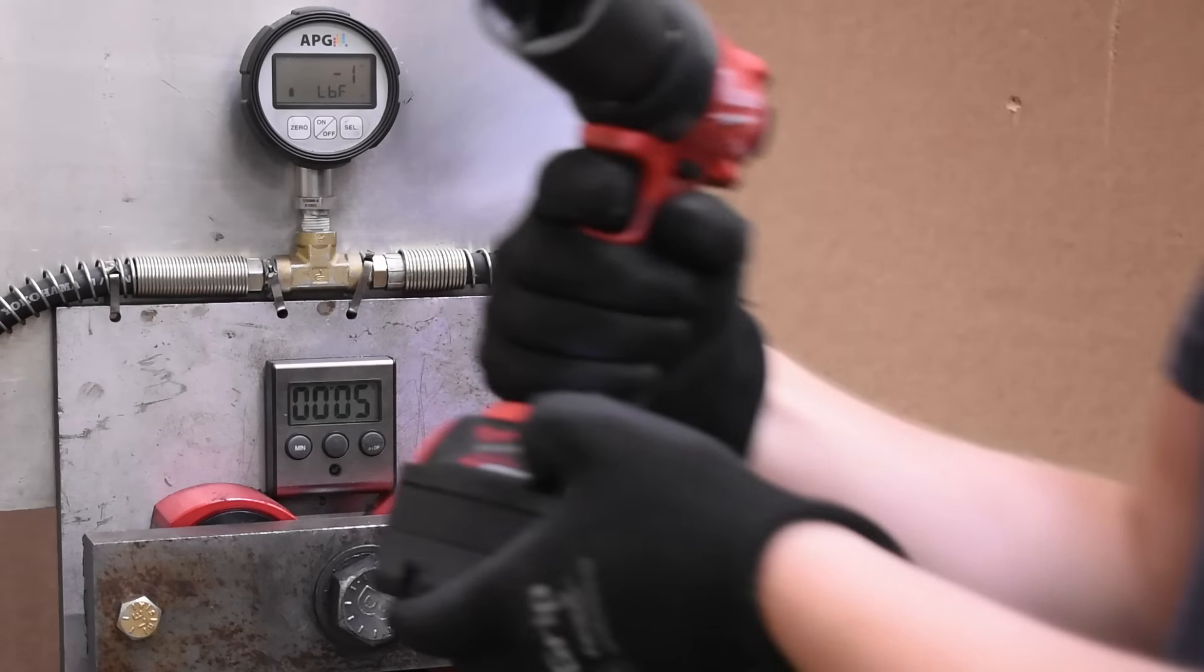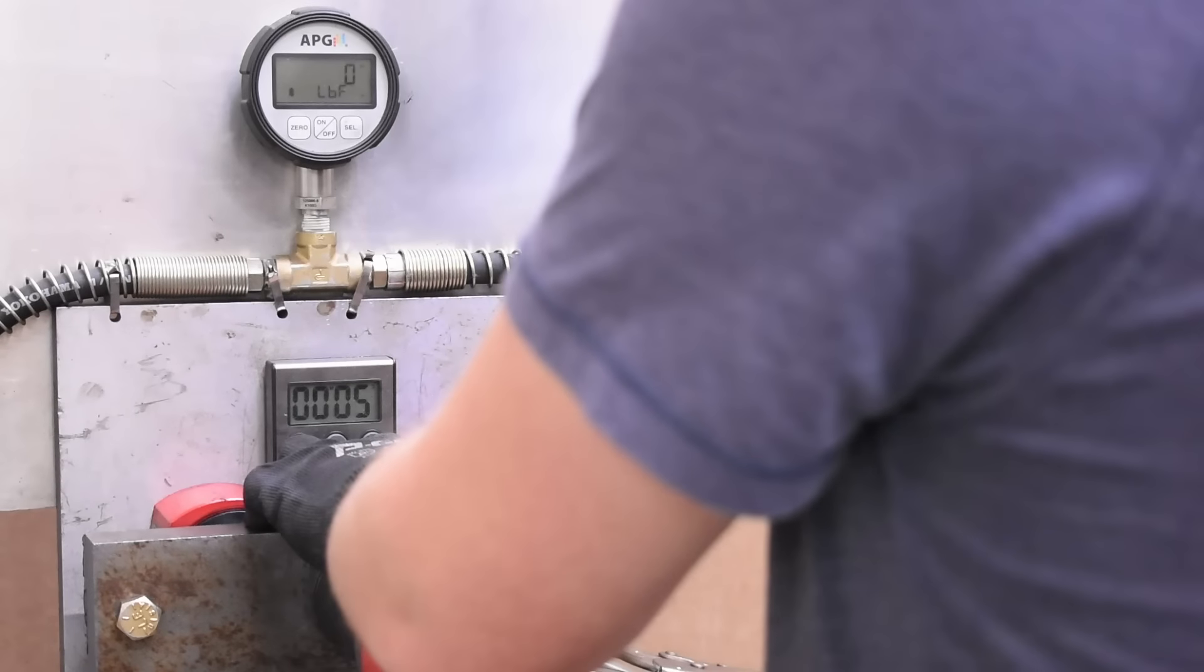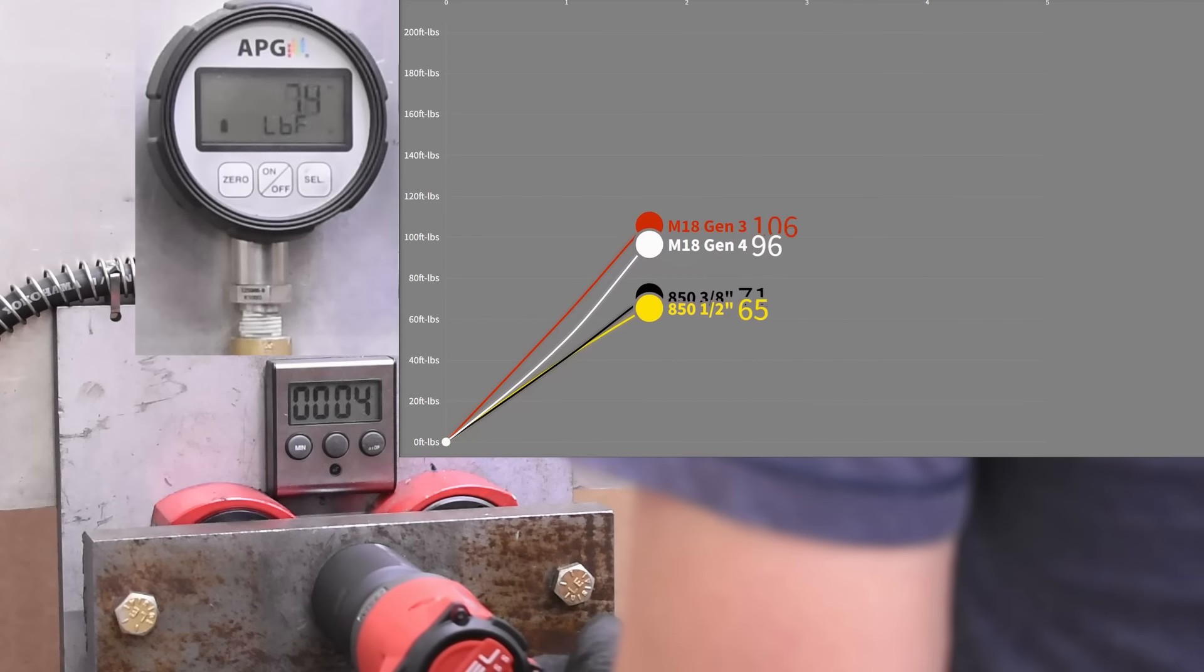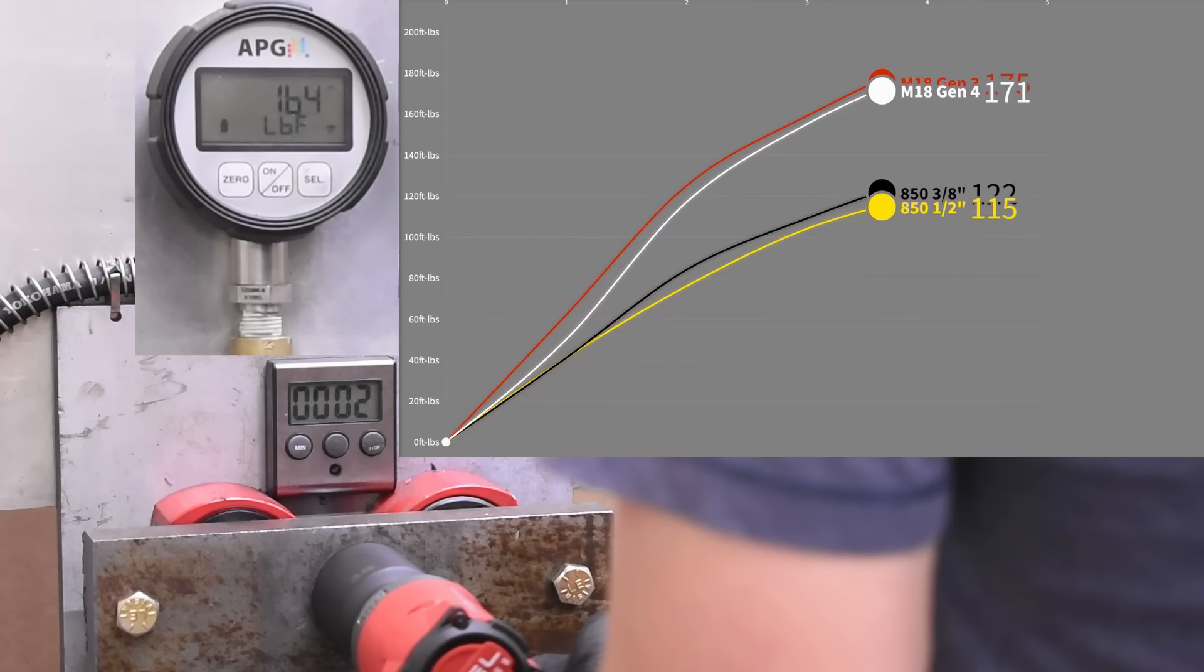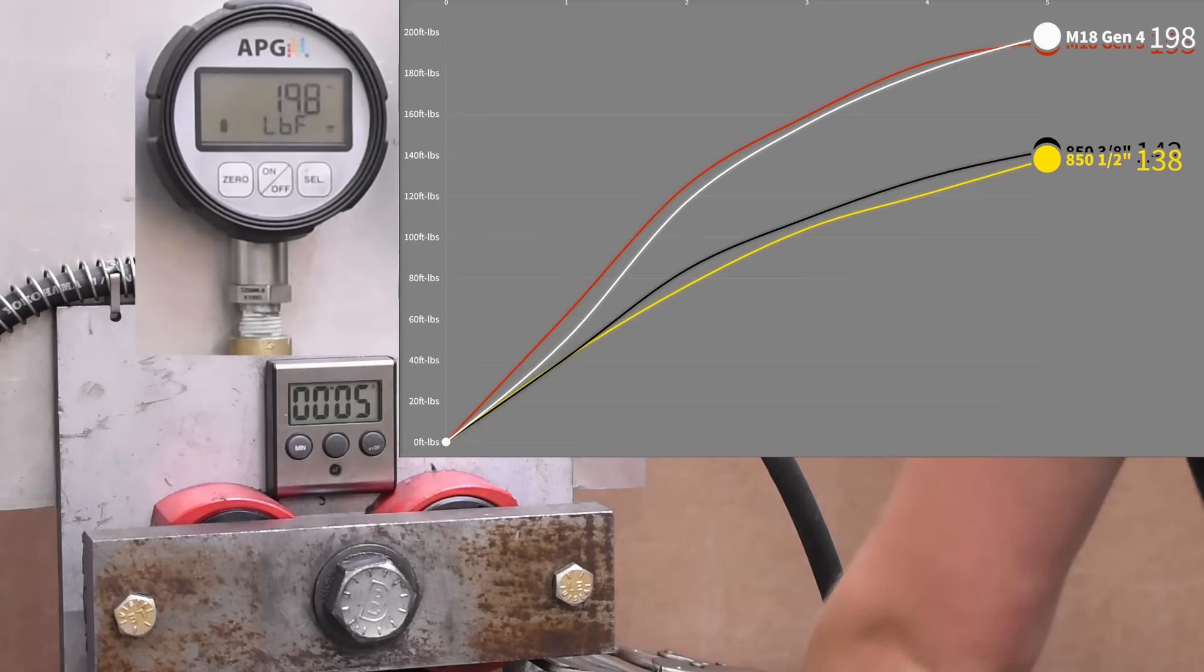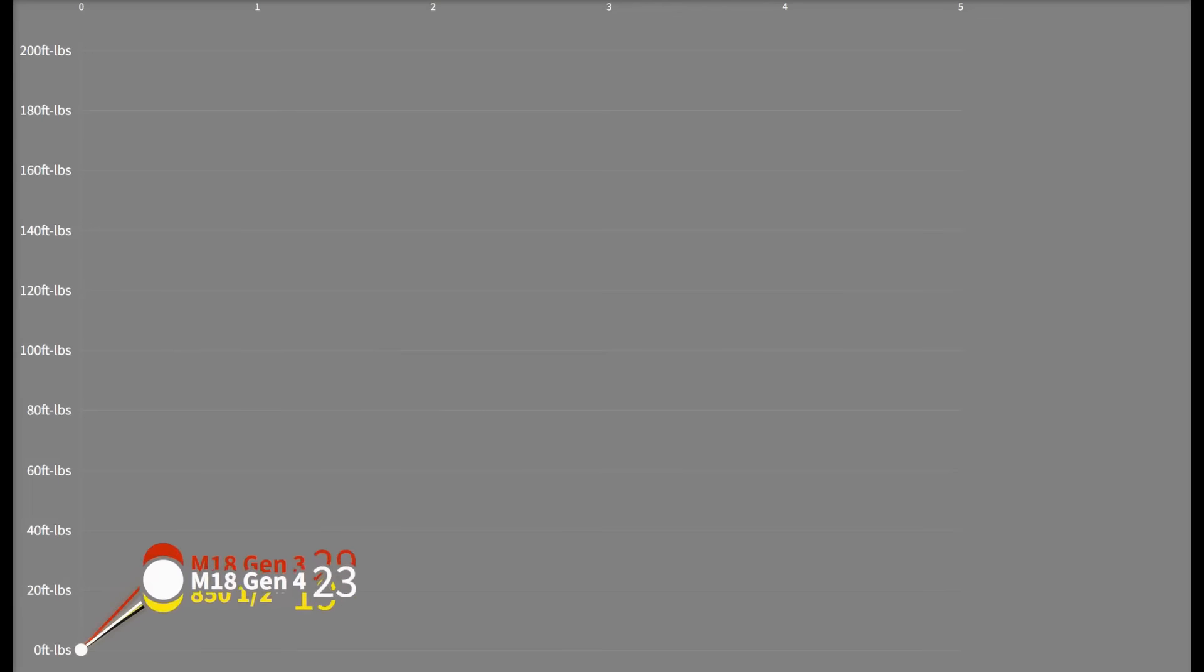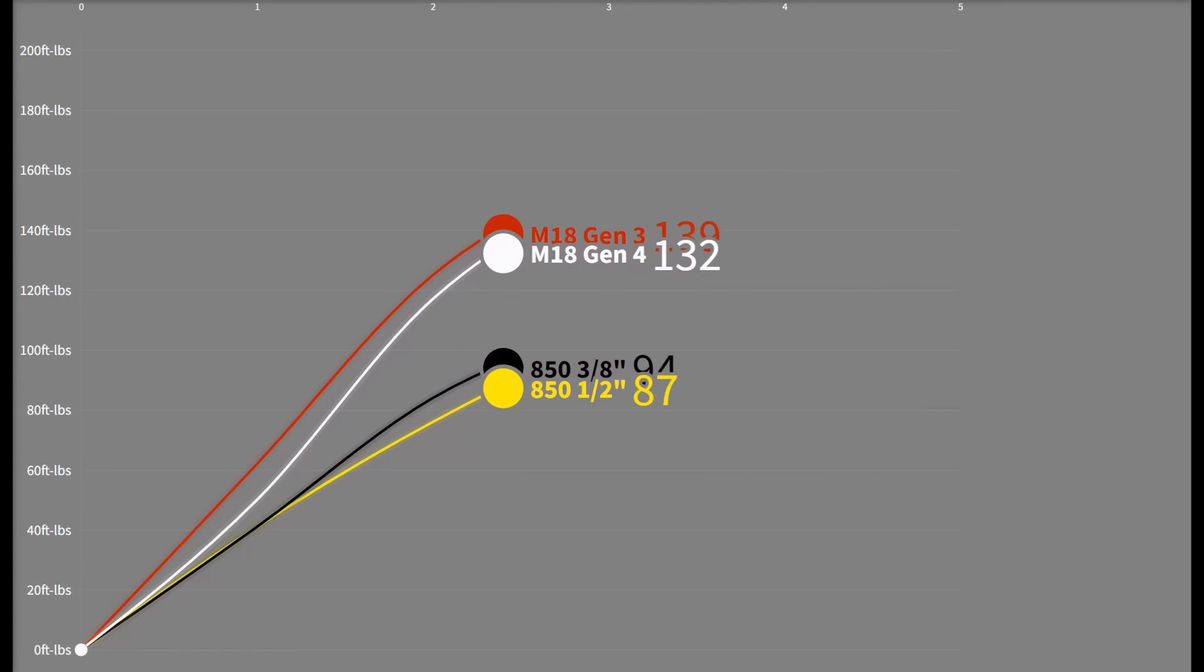Time for the Gen 4. 198 foot pounds, that's a bit up on the 195 but coming in late which is a surprise. I felt this tool would be sort of an all-up-front type of tool.